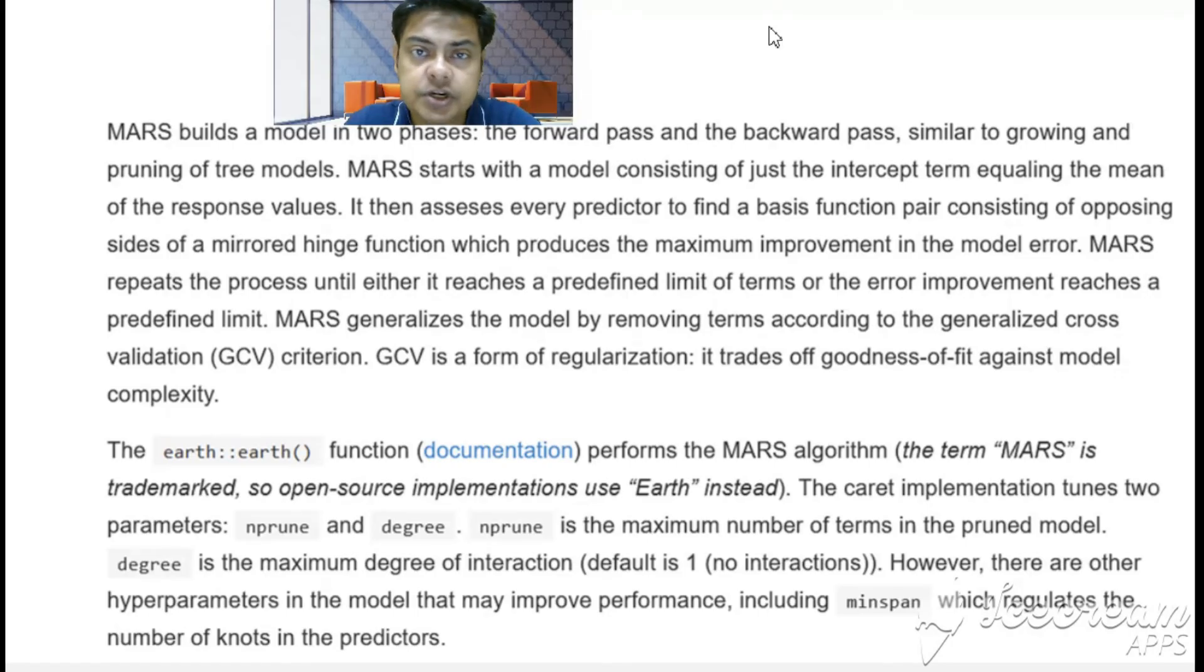There's an earth function in R Studio and that's an open source function. Otherwise, if you use Statistica it's called MARS splines. If you use Salford Minitab then it's called MARS because the copyright is still with Salford, and now Minitab is merged with it.